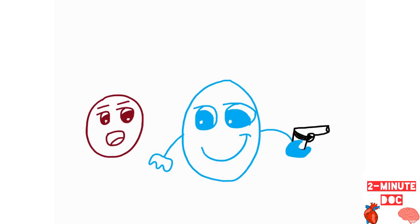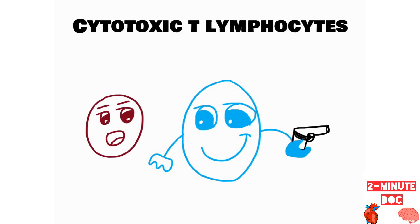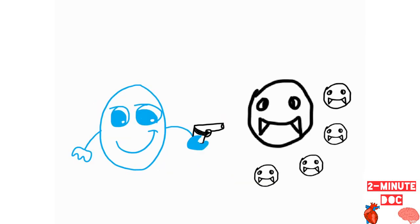This policeman who is going to take charge is the cytotoxic T lymphocytes. The one who is holding the gun right here is the cytotoxic T lymphocytes. What he is going to do is go and kill all the foreign guys who have come — not just the one guy, but all the people who look similar to that guy. By doing so, he kills those cells — that is cell lysis. This is the mechanism of what is going to happen.